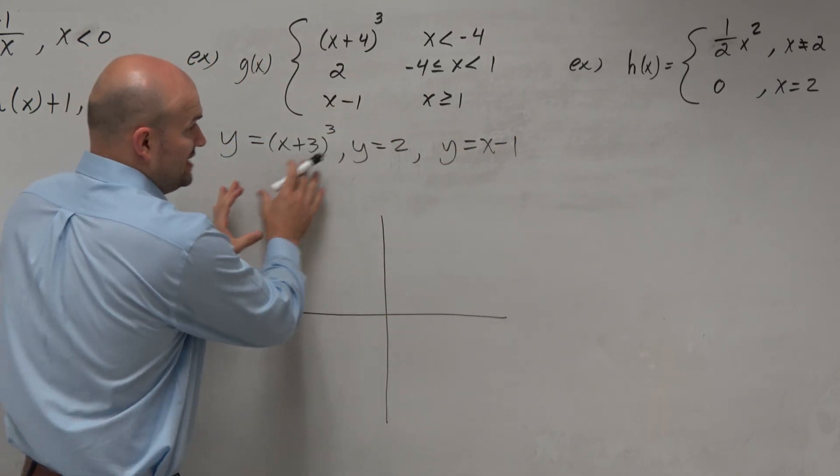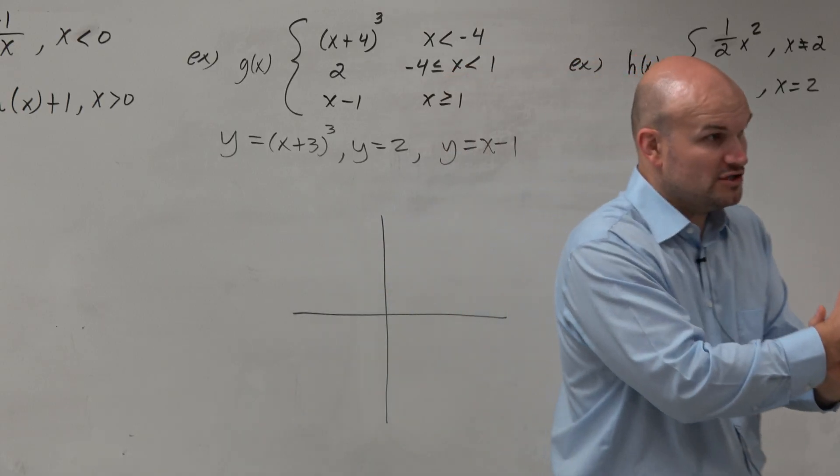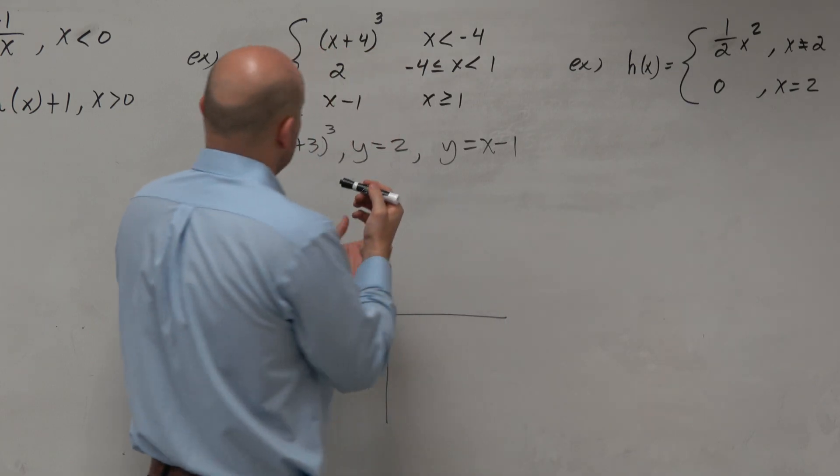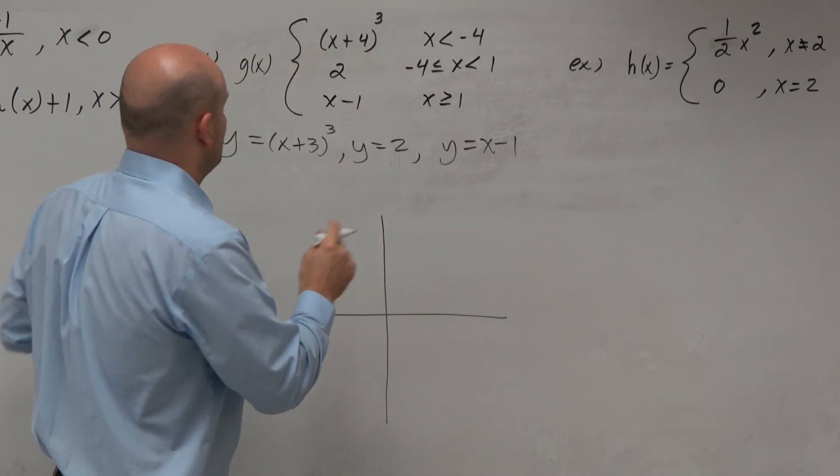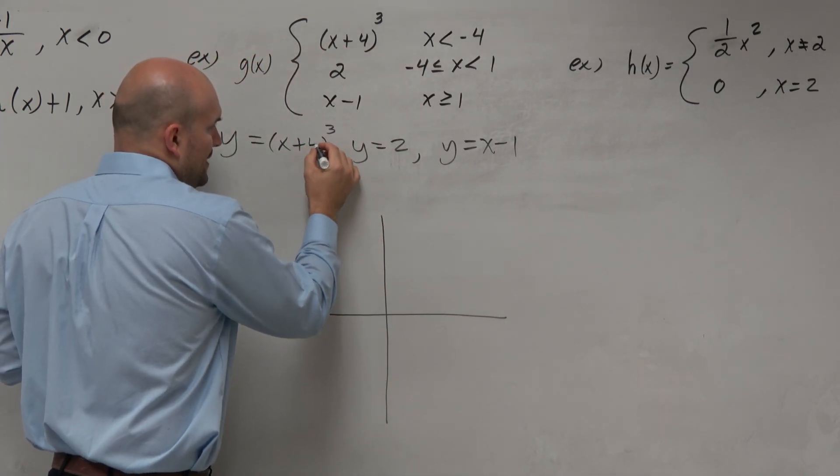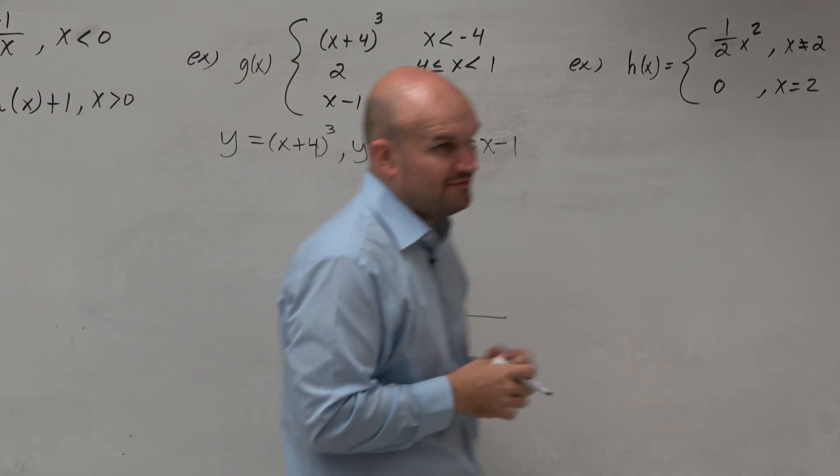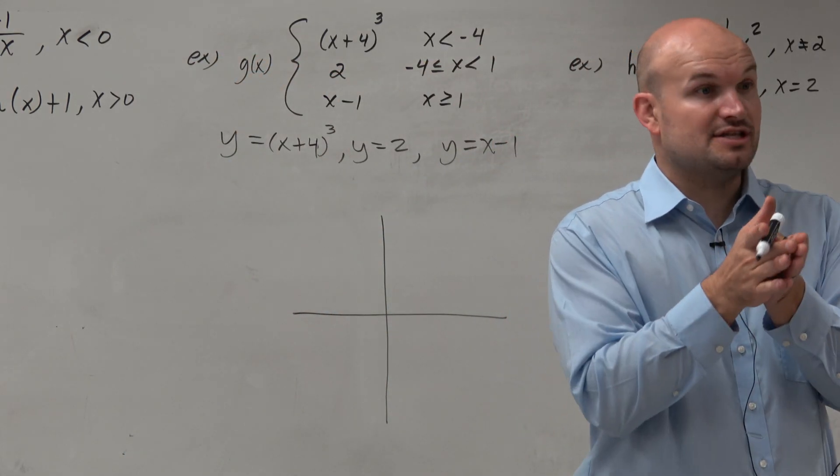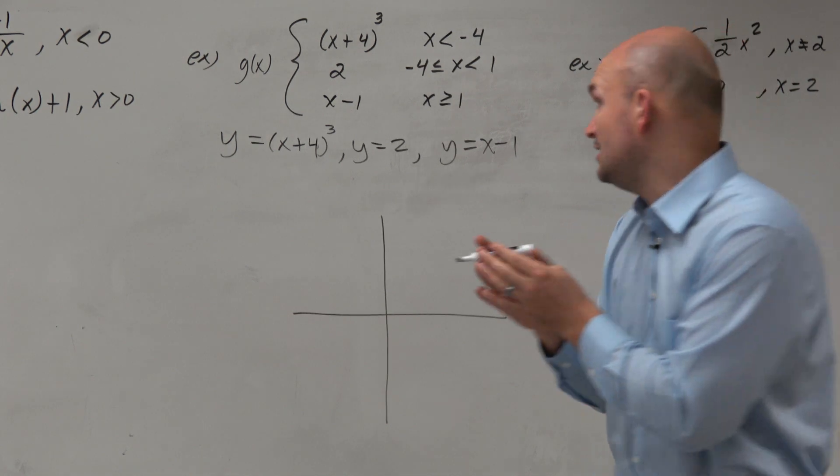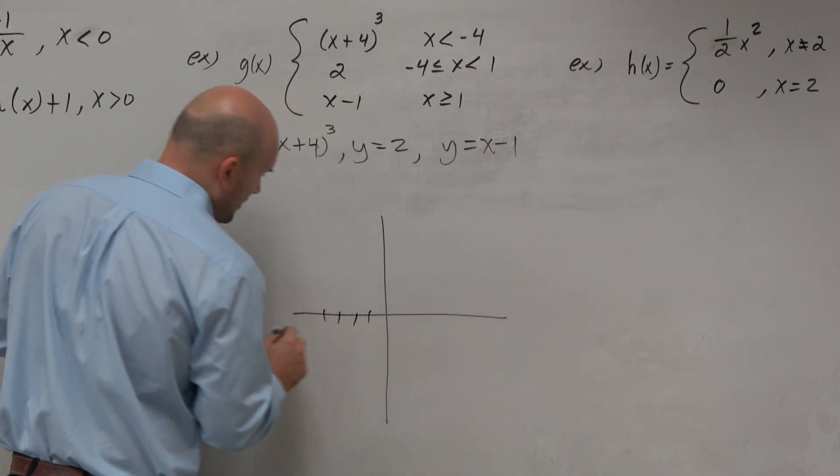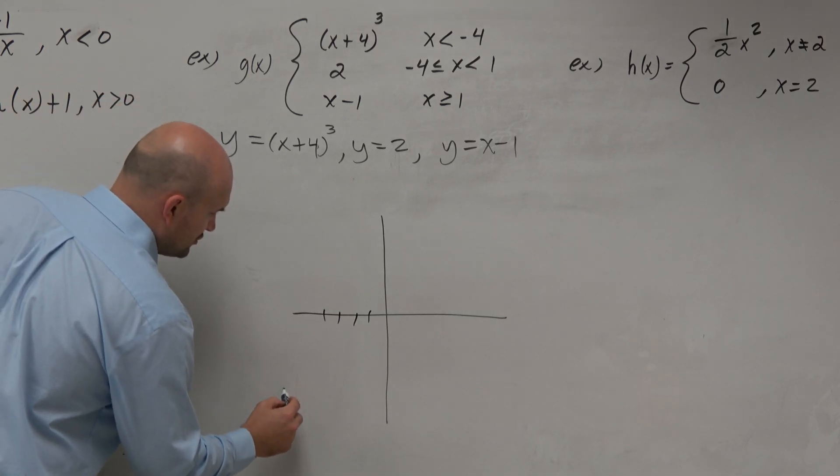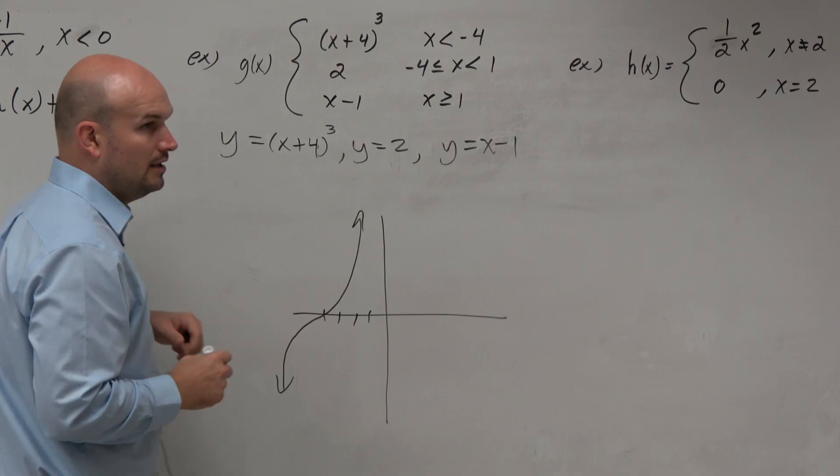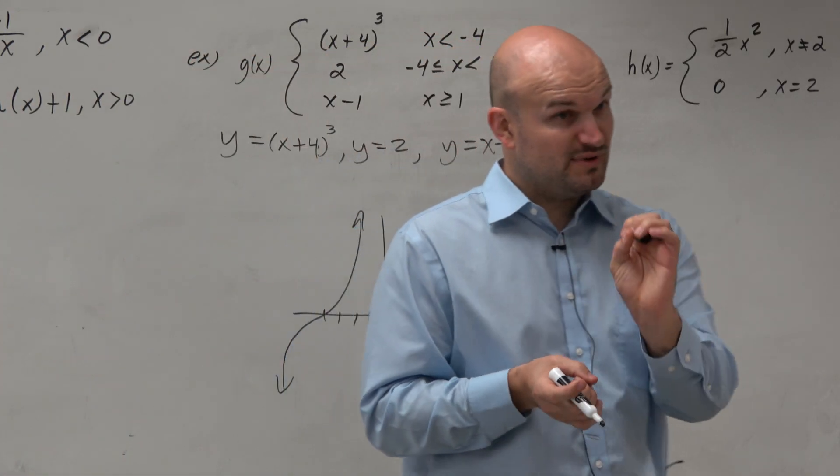Now, can we graph each of these parent functions? Well, yes, we should. X plus 4 cubed. Oh, thank you. OK. So in this example, we have x plus 4 cubed, and we know from our basic transformations that is the cubic function shifted four units to the left. So one, two, three, four. And we should know the general shape of the cubic function. It's going to look like that S curve. However,